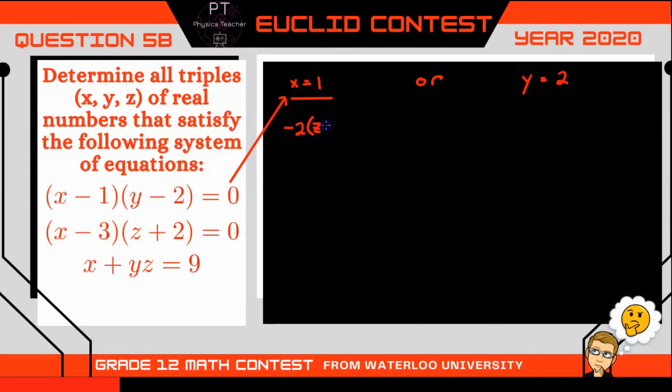And that'll be equal to 0. And the third equation we would be left with 1 plus yz which equals 9. Well looking at this second equation there's only one solution here, right? z is going to be equal to negative 2.